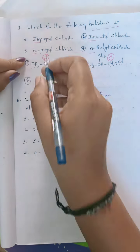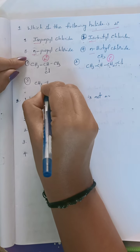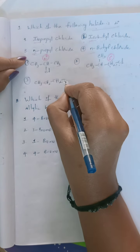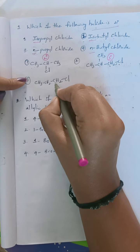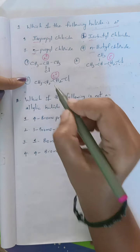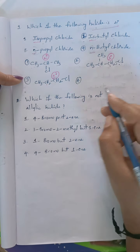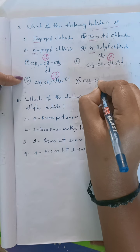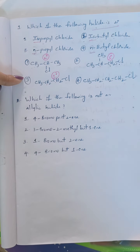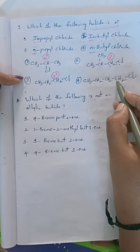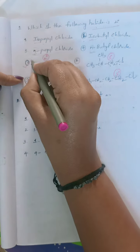N-propyl chloride: all carbons are in a straight chain — three carbons: CH3-CH2-CH2-Cl. The chlorine-containing carbon is attached with only one other carbon, so it is a primary halide. N-butyl chloride: all four carbons in a straight chain: CH3-CH2-CH2-CH2-Cl. The chlorine-containing carbon is again primary — attached directly with only one carbon. So the second, third, and fourth are all primary halides, and the first one — isopropyl chloride — is the secondary halide. Answer is the first one.